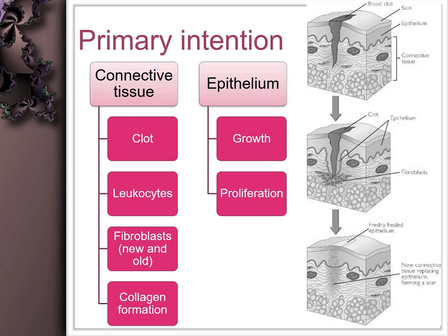Healing by primary intention involves a cut which is opposed or approximated. Initially the cut gives rise to bleeding and formation of clots. This clot formation causes extravasation of leukocytes and formation of fibroblasts, which in turn form collagen. While this is happening, the epithelium also starts to grow and proliferate, forming a fully healed tissue.